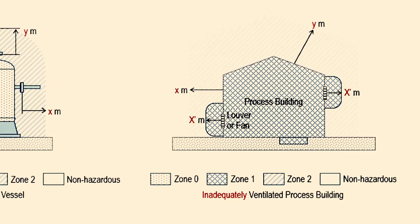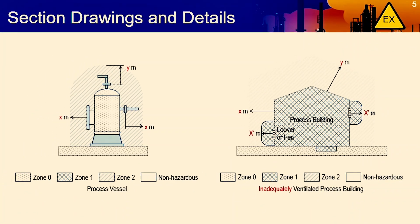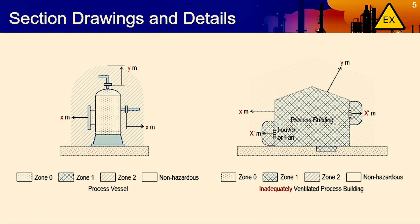For building cross-sections, be sure to indicate classification extent surrounding doors, windows, and ventilation openings.